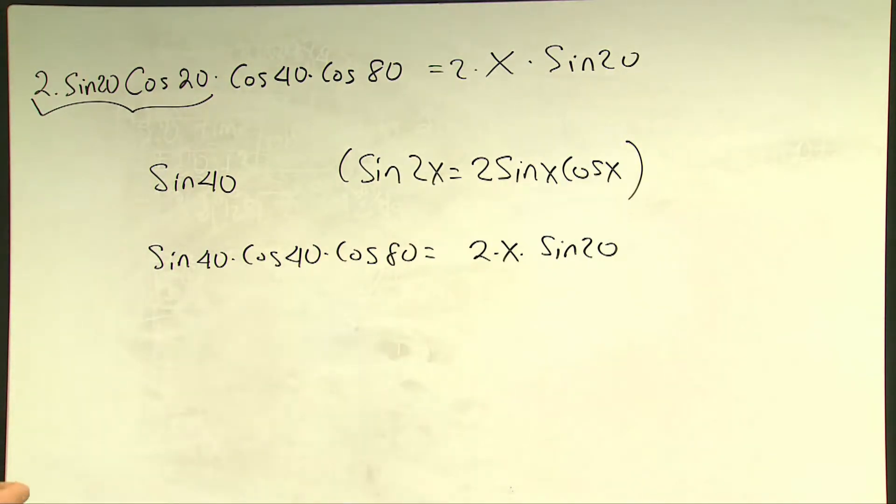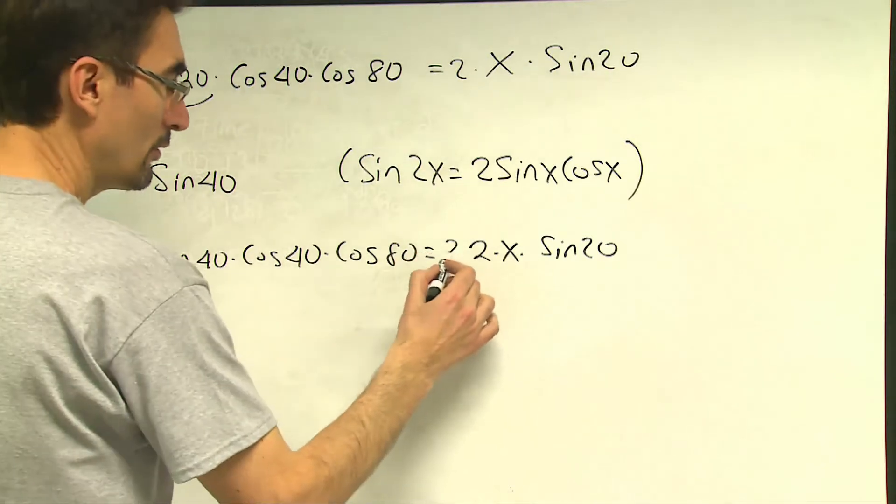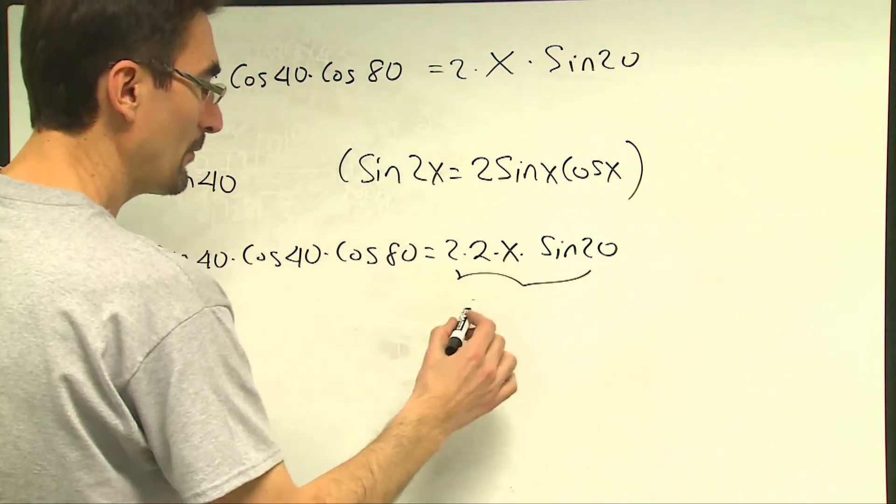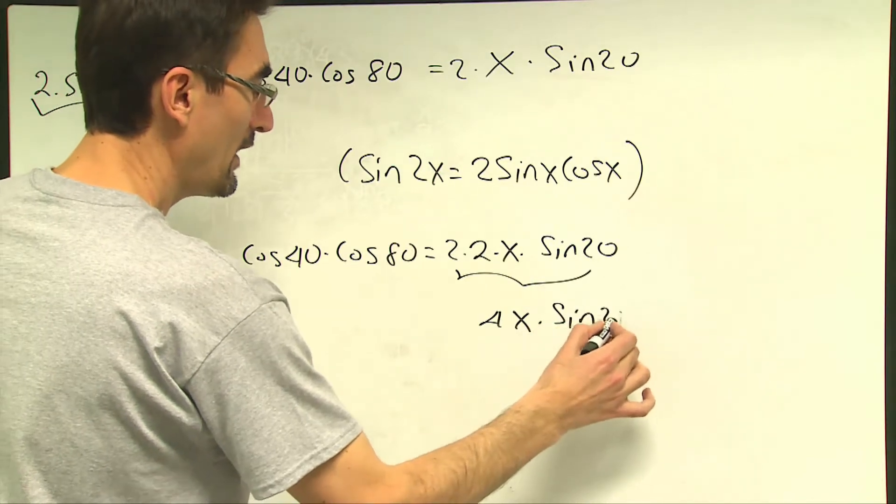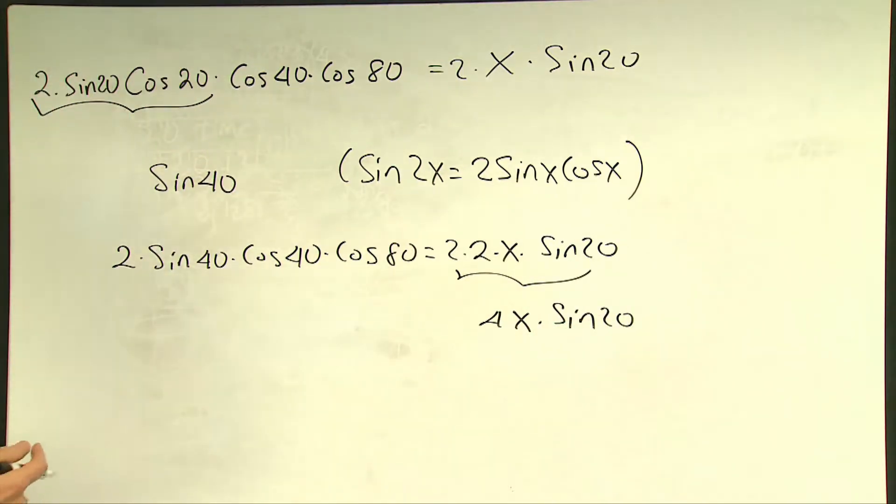But the same strategy, if I multiply each side by 2, this side becomes 4x sine 20. Whereas on the left hand side, I come across another good application of half angle formula where 2 times sine 40 times cosine 40 will be equal to sine 80.